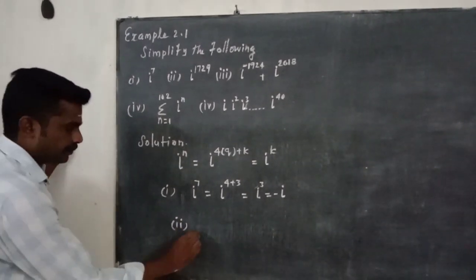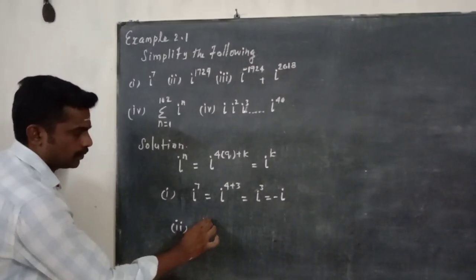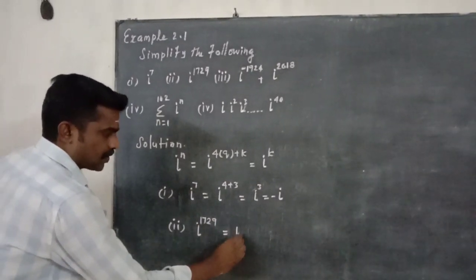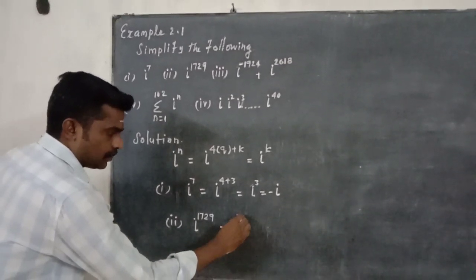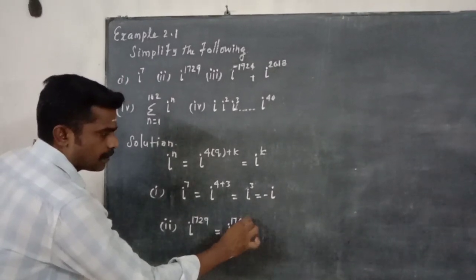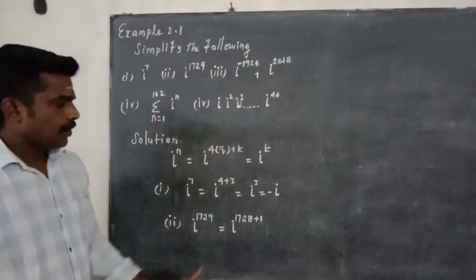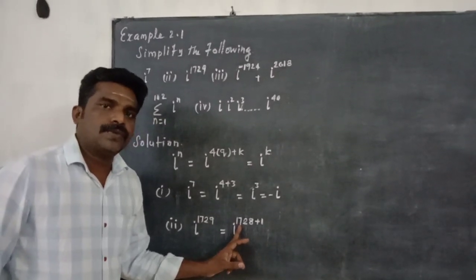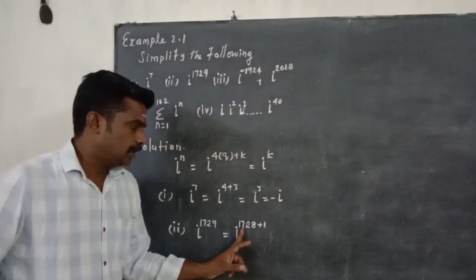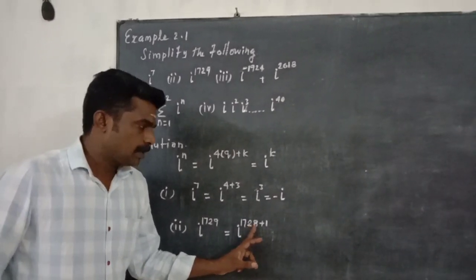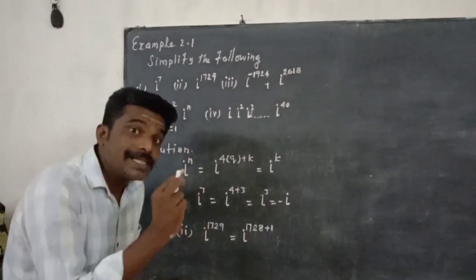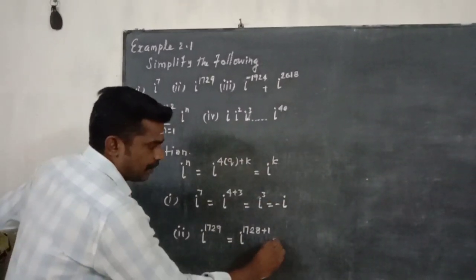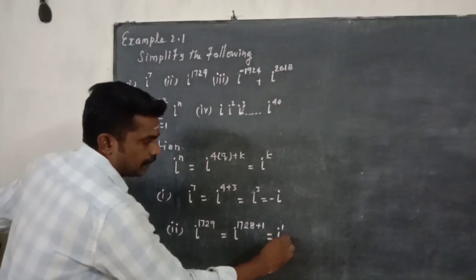Second: i power 1729. We write 1729 as 1728 plus 1. Dividing 1728 by 4: 4 goes 432 times with balance 0, so 1728 is a multiple of 4. Therefore i power 1729 equals i power 4 times something, times i power 1, which equals i.